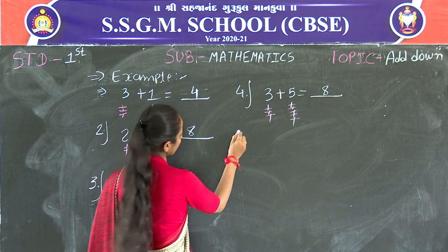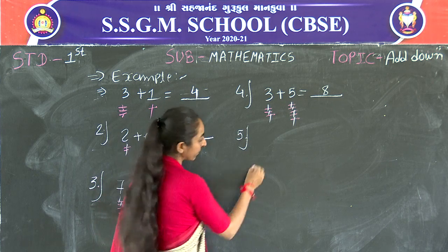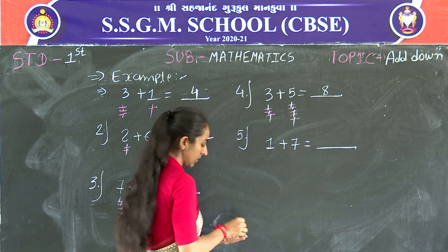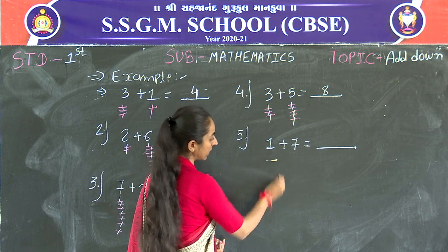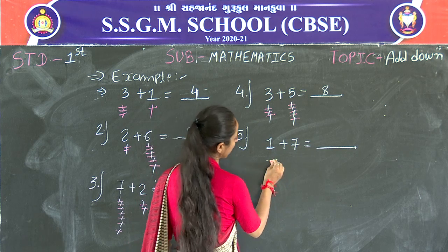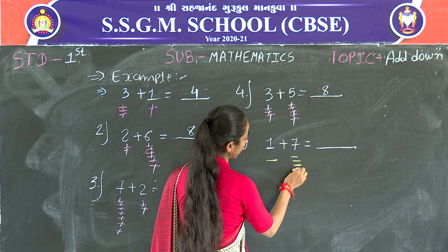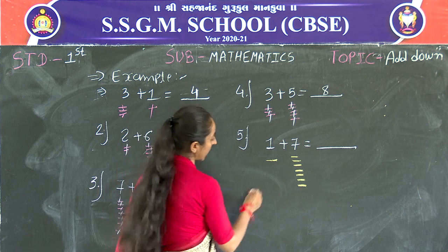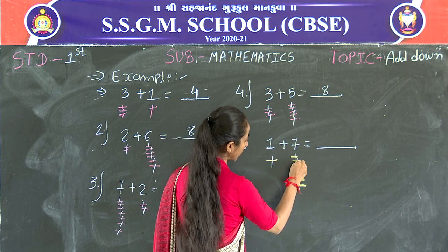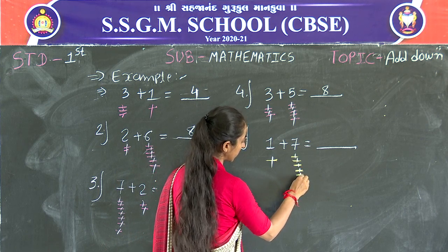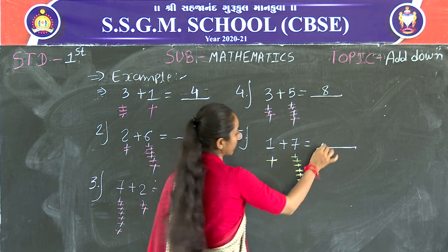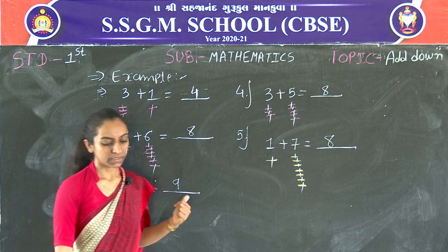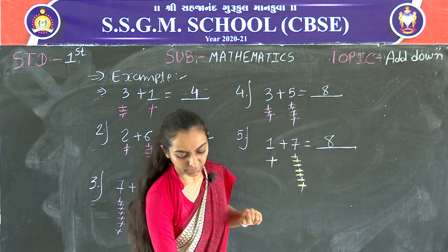Next one: 1 plus 7. Draw 1 line first. Now draw 7 lines: 1, 2, 3, 4, 5, 6, 7. Count all the lines: 1, 2, 3, 4, 5, 6, 7, 8. 1 plus 7 is equal to 8. This is the type of addition you have to do.